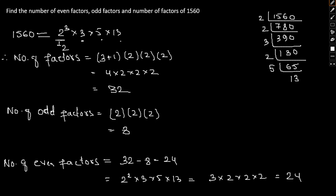So that's the total number of factors being 32, odd factors being 8, and even factors being 24.